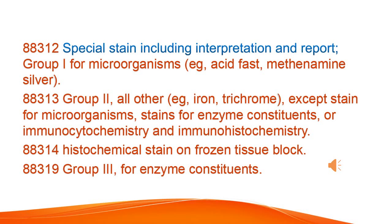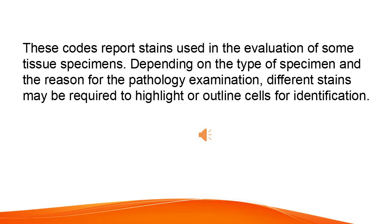Special stain, including interpretation and report: Group 1 for microorganisms, e.g., acid-fast, methenamine-silver. Group 2, all other, e.g., iron, trichrome, except stain for microorganisms, stains for enzyme constituents, or immunocytochemistry and immunohistochemistry. Histochemical stain on frozen tissue block, Group 3 for enzyme constituents. These codes report stains used in the evaluation of some tissue specimens. Depending on the type of specimen and the reason for the pathology examination, different stains may be required to highlight or outline cells for identification.